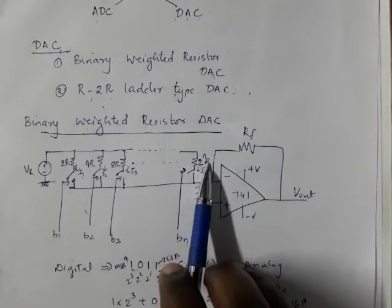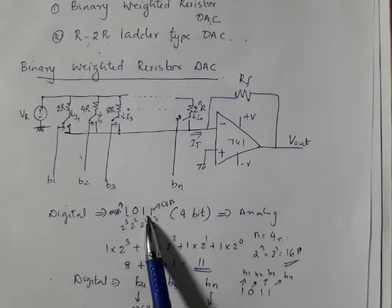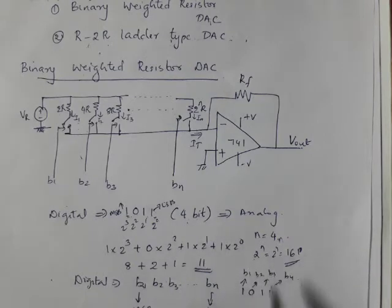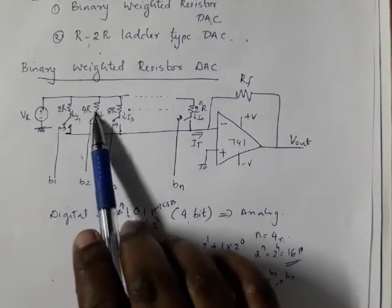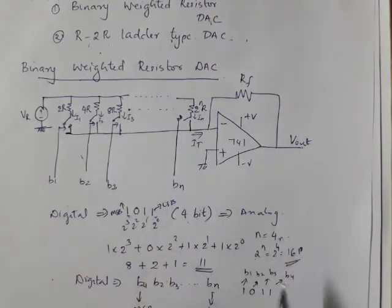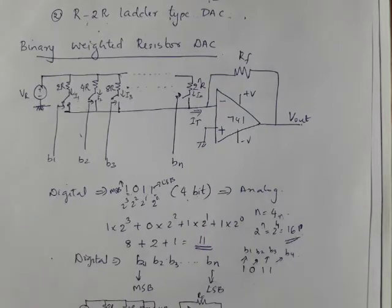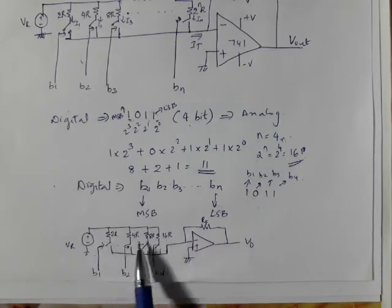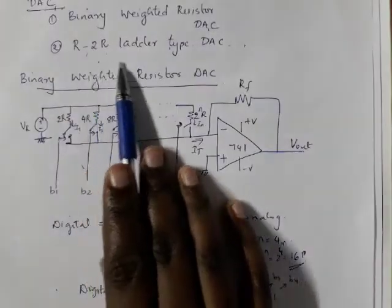For example, if we have a 4-bit digital input, the binary weighted resistor DAC requires 2R, 4R, 8R, up to 2^n different values of resistors. This is a major drawback. The R2R ladder type DAC overcomes this by using just R and 2R combinations.